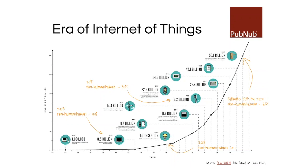This is something Cisco observed — they tracked the number of non-human devices connected to the internet versus actual humans. Around 2003 that ratio was only 0.08, but now there are more machines, bots, crawlers, and other devices connected to the internet. By around 2015 the ratio was 3.47, and Cisco estimates 50 billion devices and objects will be connected to the internet by 2020.